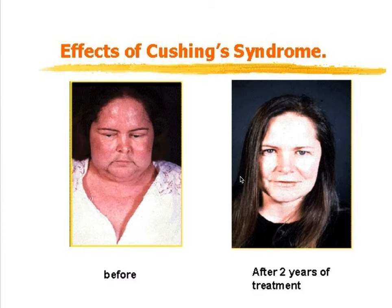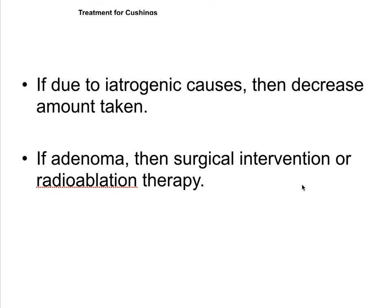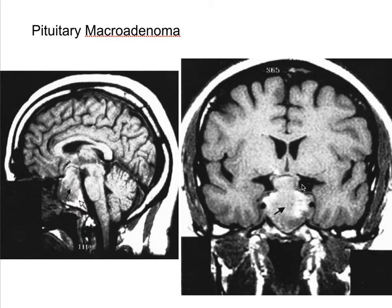Treatment effects: before and after two years of treatment, removing the excess cortisol, you see the face become less puffy and return to normal. If it's iatrogenic, decrease the amount taken. If it's a tumor adenoma, surgically remove it or use radioablation therapy. For a pituitary macroadenoma, access is through the nose via the sphenoid bone, since the pituitary sits in the sella turcica.